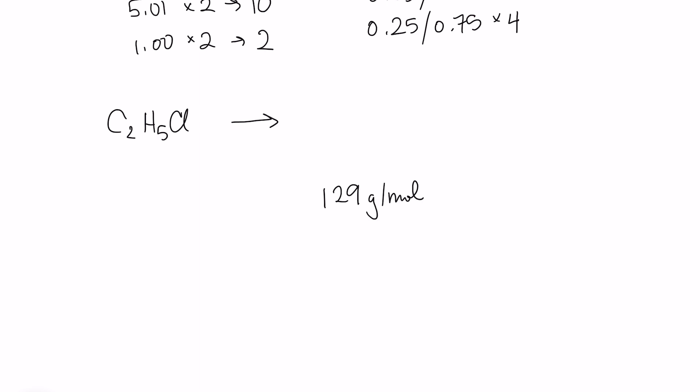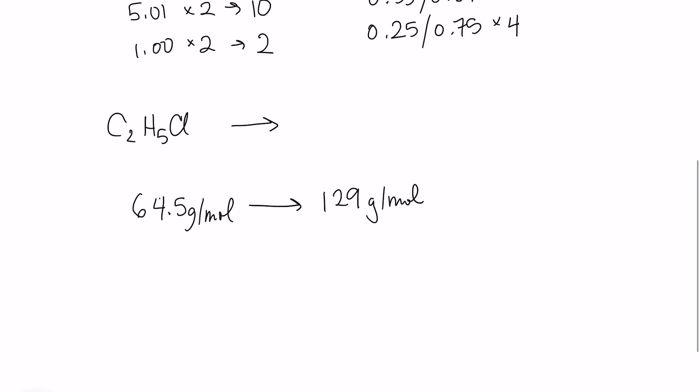So I'm going to have to figure out how I get from the empirical formula to the molecular formula. And the way that I'm going to do it is I'm going to look at C2H5Cl, and I'm going to add up the mass. When I add these up, I get 64.5 grams per mole. So I'm going to ask myself, well, to go from 64.5 to 129, I have to multiply by 2. So to get from the empirical formula to the molecular formula, I have to multiply those subscripts by 2 as well. So I get C4H10Cl2 for my molecular formula.